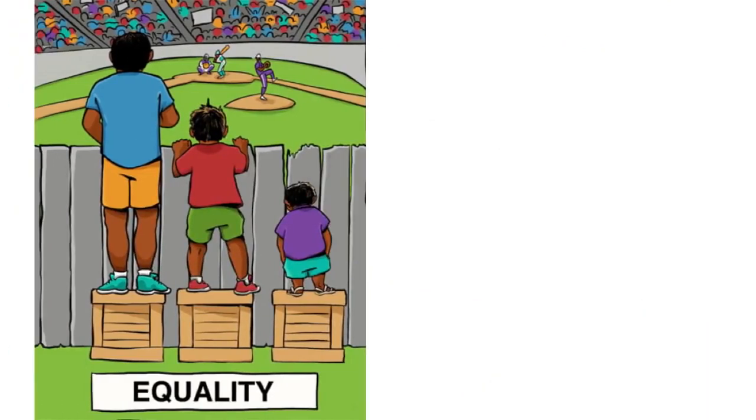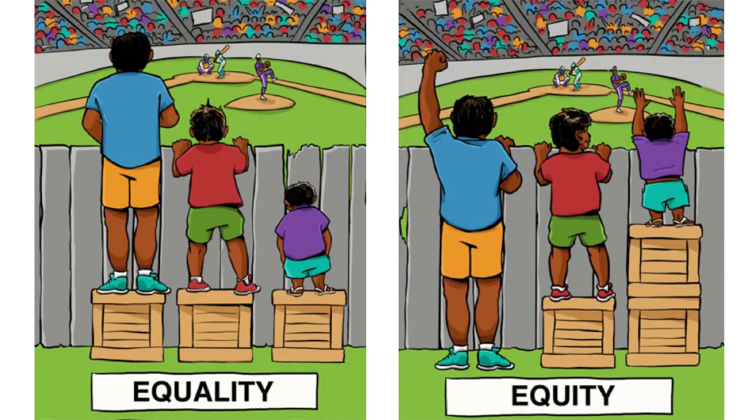On the other side of the fence, the middle one is the lucky one because he's got just the right size he needs. But the little one still doesn't get what he wants. Equity is: don't give it to the first one if he doesn't need it, and the smallest one can only enjoy seeing the game with two boxes.